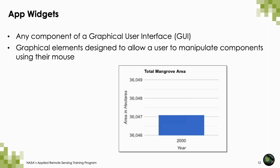As we go through the process of constructing an app, we are going to be using a number of widgets. Widgets are any component of a graphical user interface or GUI — when I say app, I could also say GUI, they're interchangeable in this context. Graphical elements like graphs or dropdown menus are designed to allow the user to manipulate components using just their mouse. Examples include panels, buttons, checkboxes, graphs, slider tools, thumbnails, and a wide variety of other elements depending on what you're trying to show.